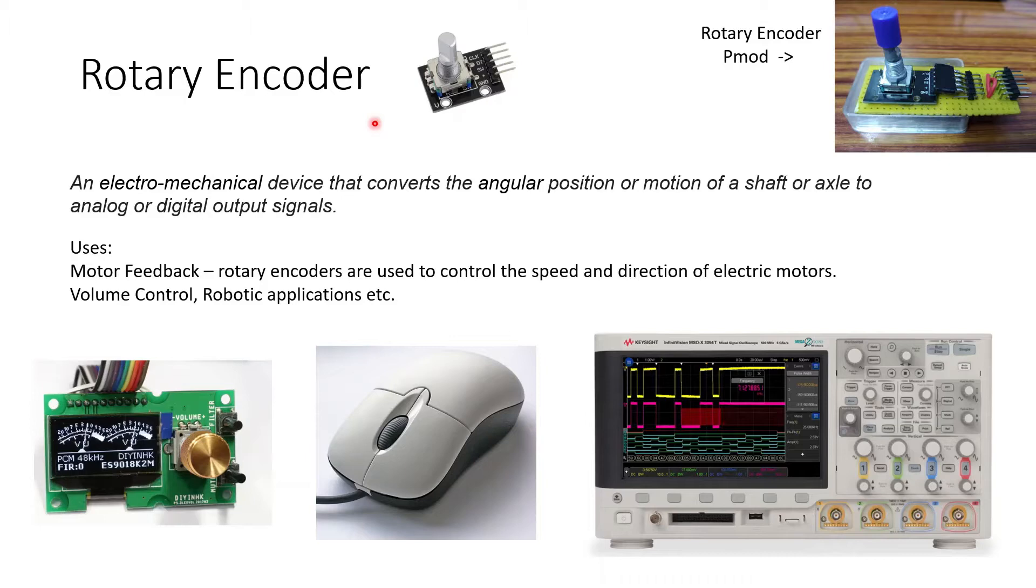Meaning, when we rotate the shaft or the axle of this rotary encoder, it will convert those into digital signals. So here, this is the rotary encoder PMOD that I made. I'll link this in the description also. If you want, you can make it on your own or you can buy it from the Digilent website.